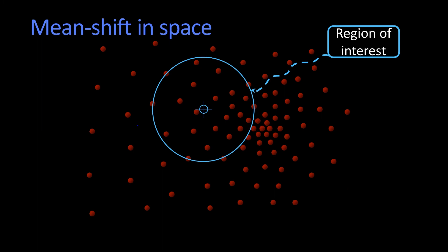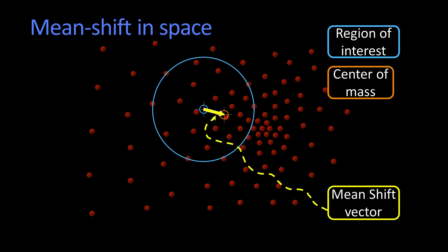So what happens is I put down this region of interest. I compute the center of mass. That's the weighted center of mass. And the difference between them, that's called my mean shift vector. And I just shift my mean there. Isn't that a beautiful animation?